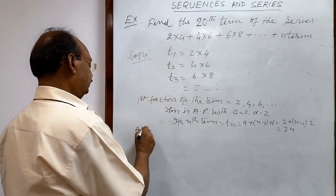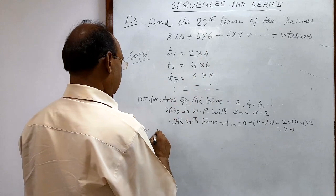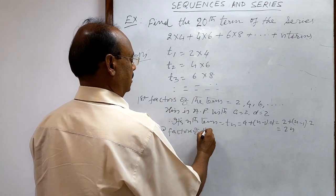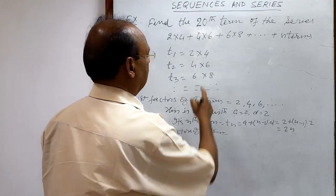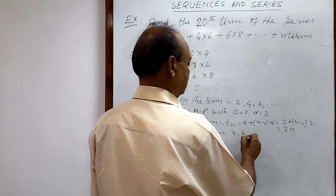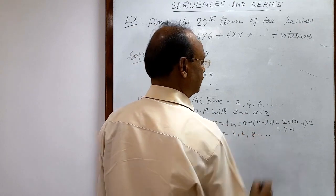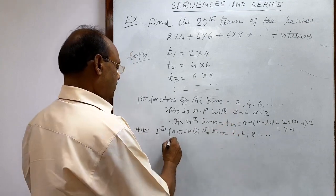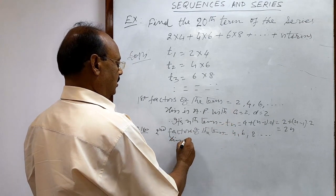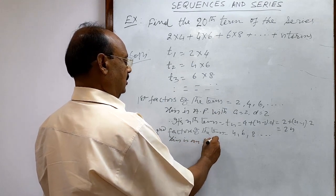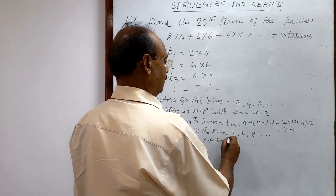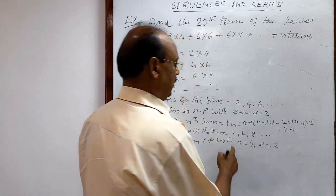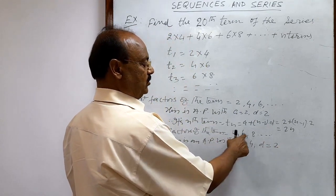The second factors of the terms are 4, 6, 8, and so on. This is also an arithmetic progression with first term a = 4 and common difference d = 2, because 4 + 2 = 6, 6 + 2 = 8, and so on.